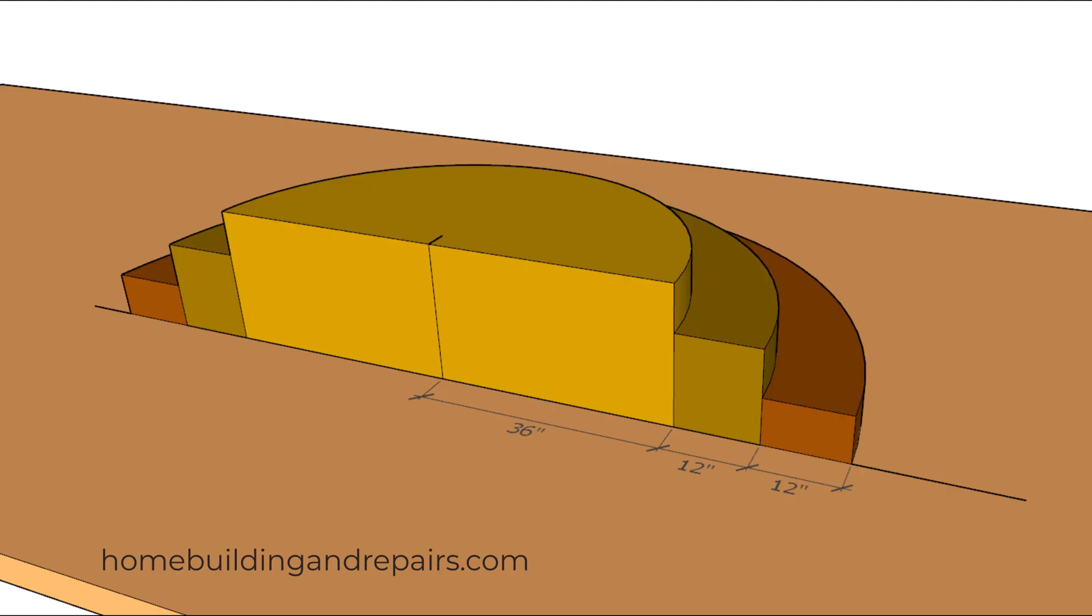Next up let's take a look at the measurements and keep in mind that your measurements may be different. Here we have a six foot diameter and a three foot radius along with two 12 inch steps. And our riser height in this example is seven inches.